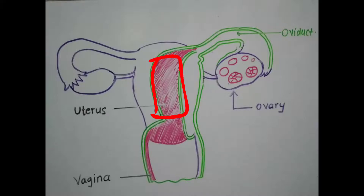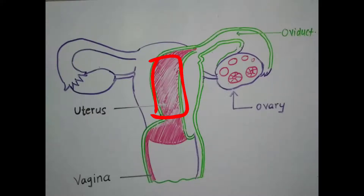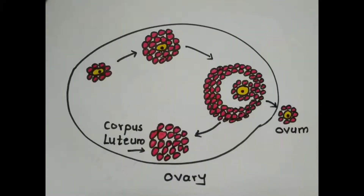The endometrium is a cushion-like lining formed in the uterus that provides all the care, nutrition, and protection required for the growing embryo. Importantly, the endometrium is synthesized prior to fertilization — the body makes itself ready for implantation of the embryo every month.